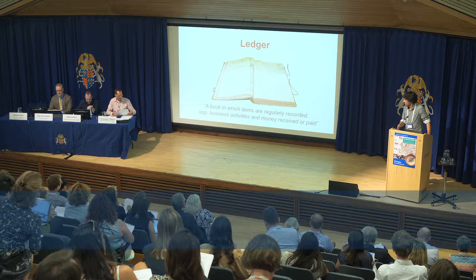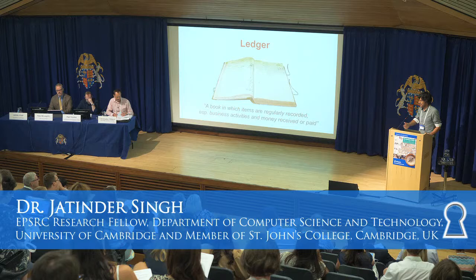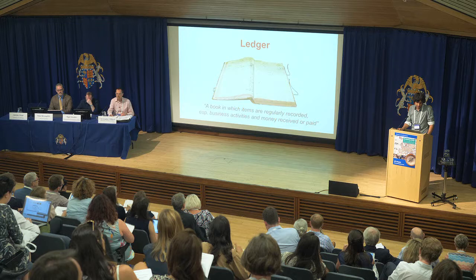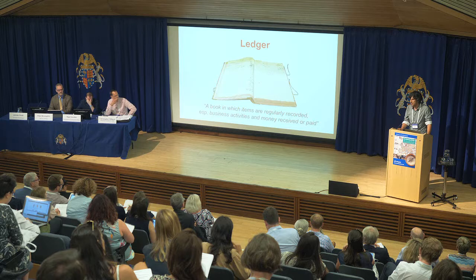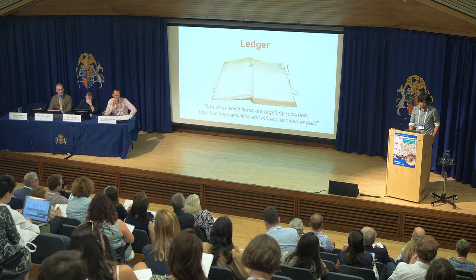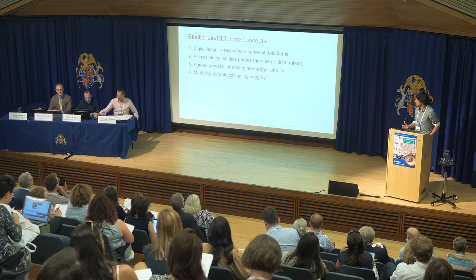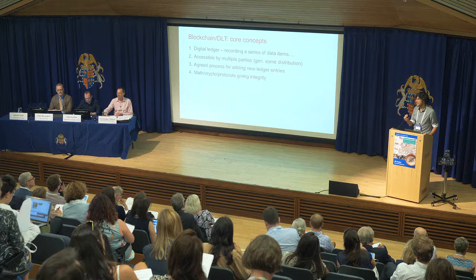Really, if we think about it, all distributed ledger technology, or blockchain as it's sometimes called, is about a ledger. Traditionally, a ledger has been around since the dawn of time. Dictionaries describe it as a book in which items are regularly recorded, especially business activities, such as recording transactions about money paid and so forth. So if we start talking about blockchain or distributed ledger technologies — I'll use the terms interchangeably — we're really talking about a digital ledger, that is some sort of electronic record of a series of data items.